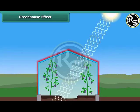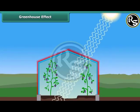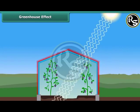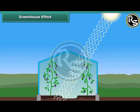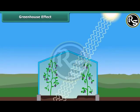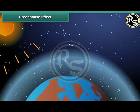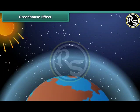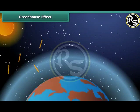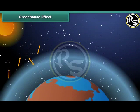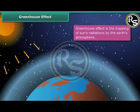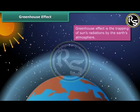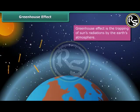Similarly, greenhouse gases like carbon dioxide, methane, and nitrous oxide in the atmosphere act like glass panes. When the sun's radiation reaches our atmosphere, some rays are reflected back into space and some are trapped by greenhouse gases, causing the atmosphere of the Earth to warm up.